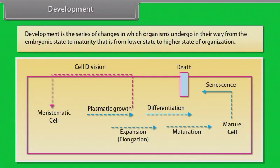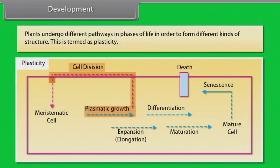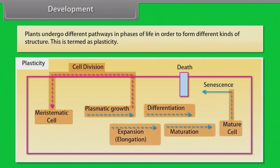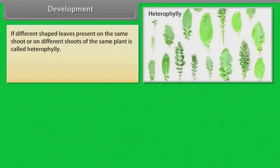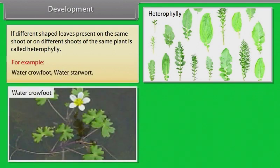Re-differentiation is the process by which meristematic cells formed by de-differentiated cells undergo changes in structure and shape to perform a specific function. Development is the series of changes in which organisms undergo in their way from the embryonic state to maturity, that is, from a lower state to a higher state of organization. Plants undergo different pathways and phases of life in order to form different kinds of structures — this is termed as plasticity. If different shaped leaves are present on the same shoot or on different shoots of the same plant, it is called heterophylly. For example, water crowfoot, water starwort.